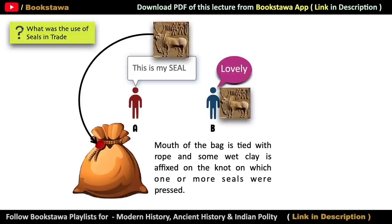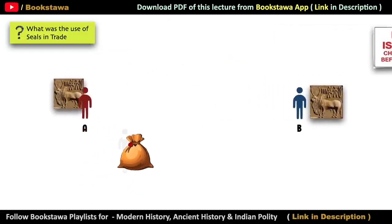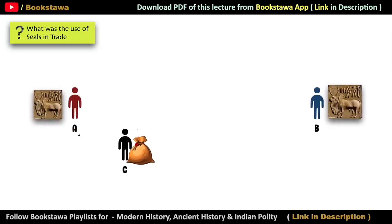Even today, products we buy have a seal on their boxes, and companies also write that if the seal is broken you should not accept that item. The same concept fits well with the Indus Valley Civilization seals. More than 2,000 seals have been found in the Indus Valley Civilization.